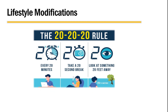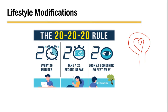Lifestyle modifications are also important, such as employing the 20-20-20 rule: after every 20 minutes, take a 20-second break and look at something 20 feet away. Ensuring proper lighting, ergonomic positioning, and reducing prolonged near work tasks without any breaks are also important.